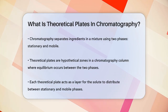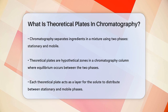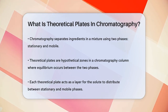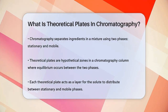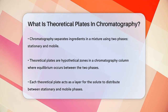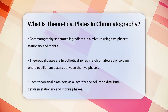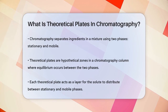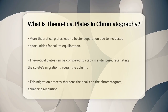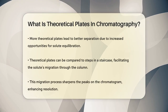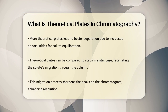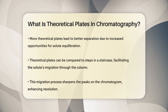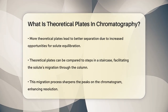Theoretical plates are hypothetical zones, or stages, within a chromatography column where the stationary and mobile phases reach equilibrium. Think of each plate as a layer where the solute — the substance you're trying to separate — distributes itself between the two phases. The more of these plates you have, the better the separation will be, because there are more opportunities for the solute to equilibrate between the phases.